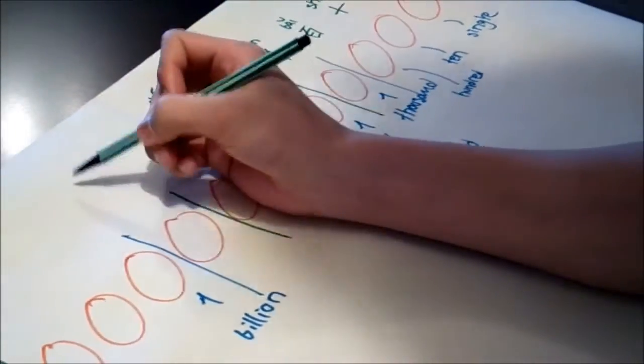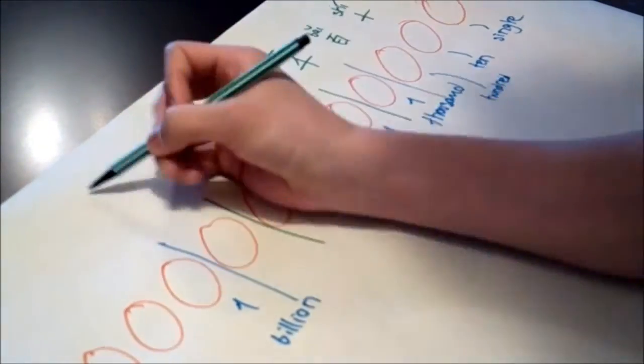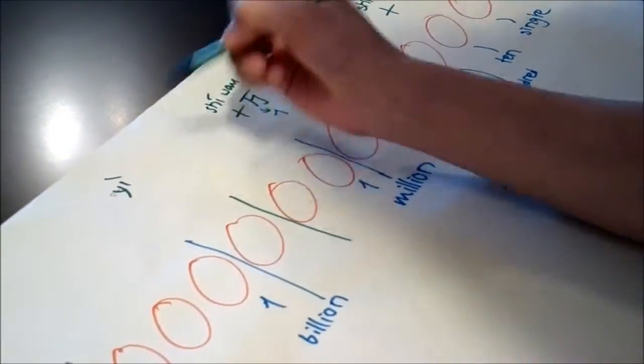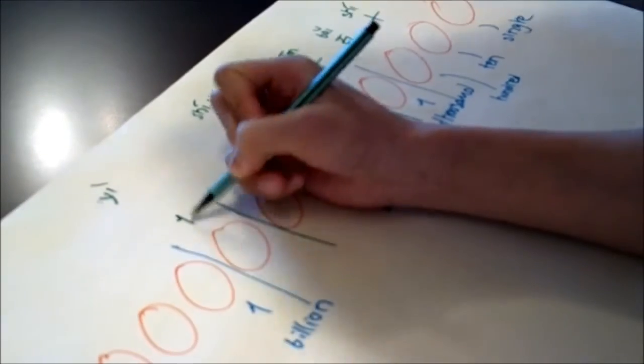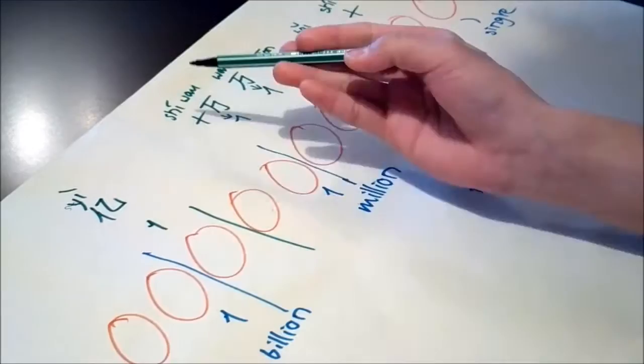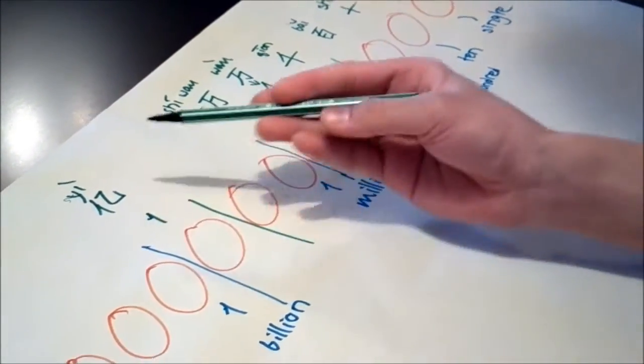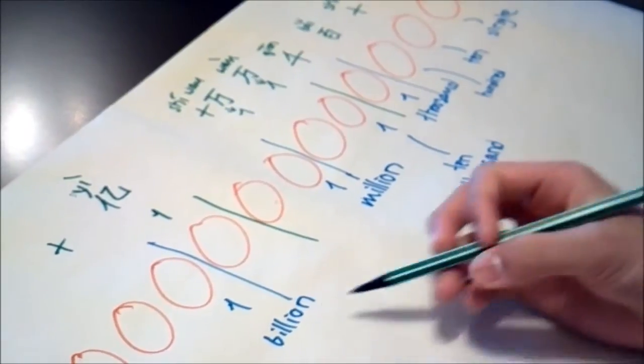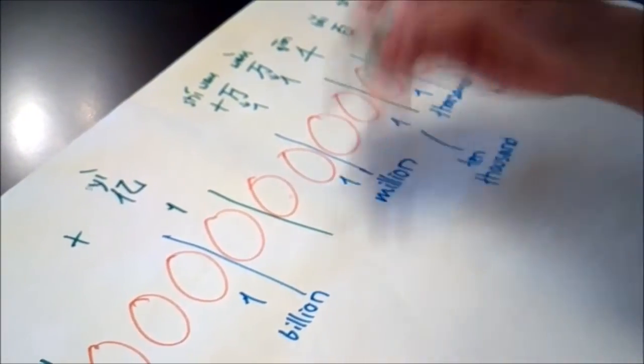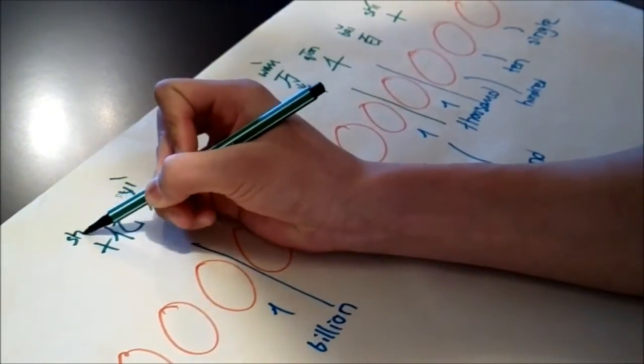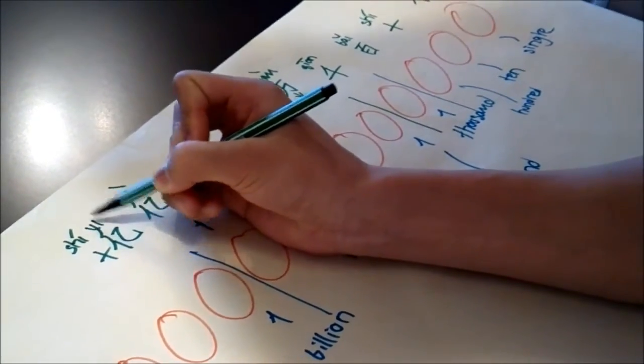What we have is yi. So yi is like this. I know it sounds very weird, but it's what it is. So if you have one over here, it's yi. And yi is written like this. So after yi, if you want to say ten yi, it would just be shi yi. So the same as shi wan. So ten thousand or ten million. You get it. Shi yi.